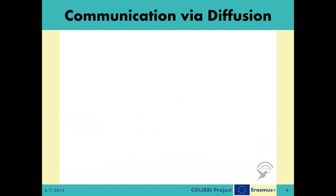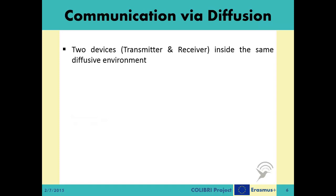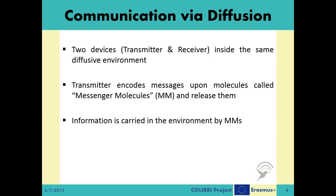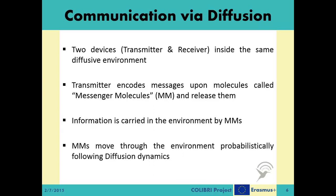After giving a general look at one of the diffusion-based intercellular communication systems, let us define the communication via diffusion system. A basic CVD system is comprised of two devices — one transmitter and one receiver — both residing in the same diffusive environment. The transmitter device encodes the information upon special molecules called messenger molecules, and releases them to the diffusive environment. These messenger molecules, or MMs for short, move through the environment following diffusion dynamics in a probabilistic fashion. Some of them arrive at the receiver and trigger the reception and decoding process of the initial message.